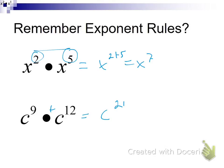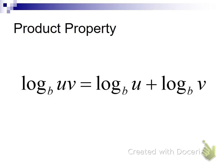Kind of the same thing with logarithms. If we have a logarithm of two factors — a logarithm of two things getting multiplied together in our argument — multiplication with exponents meant we were adding stuff. Same thing here: multiplication means we're adding stuff. We can split those factors up into their own logarithm using addition. Addition goes to multiplication; multiplication goes to addition — that's what this boils down to.